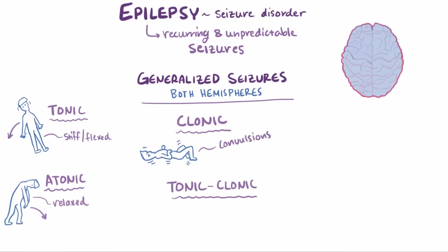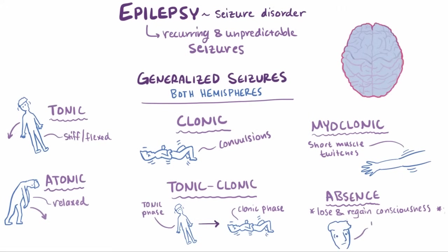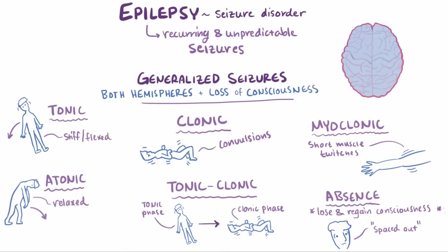Tonic-clonic seizures are the most common generalized seizures, where patients experience a tonic phase where the muscles suddenly tense up, followed by a clonic phase where the muscles rapidly contract and relax. Myoclonic seizures are short muscle twitches, sometimes just a single twitch but sometimes many in a short amount of time. Finally, there are absence seizures, where patients lose consciousness and then quickly regain it, with the only outward sign being that the person looks like they spaced out. The key for all these is that they involve both hemispheres of the brain, and patients lose consciousness either briefly or for longer periods.